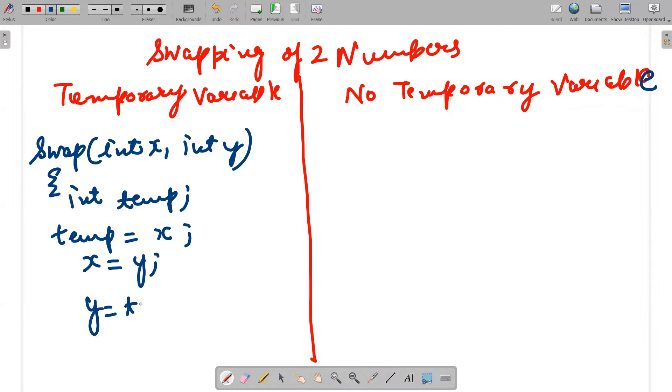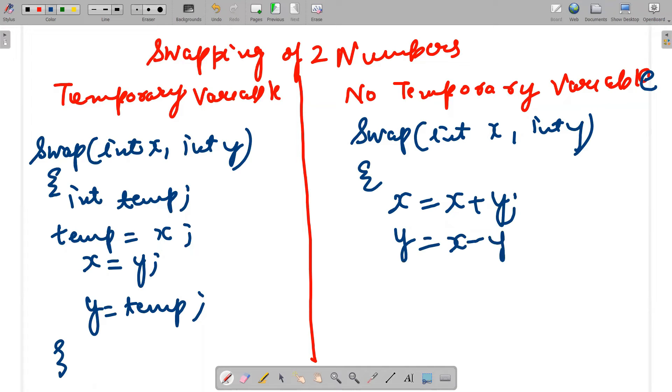So this is the logic that I'm using. If I'm not using any temporary variable, I can actually swap two numbers by a particular logic. The logic says that I can write x = x + y, y = x - y, and x = x - y. Again the swapping of two numbers will happen.